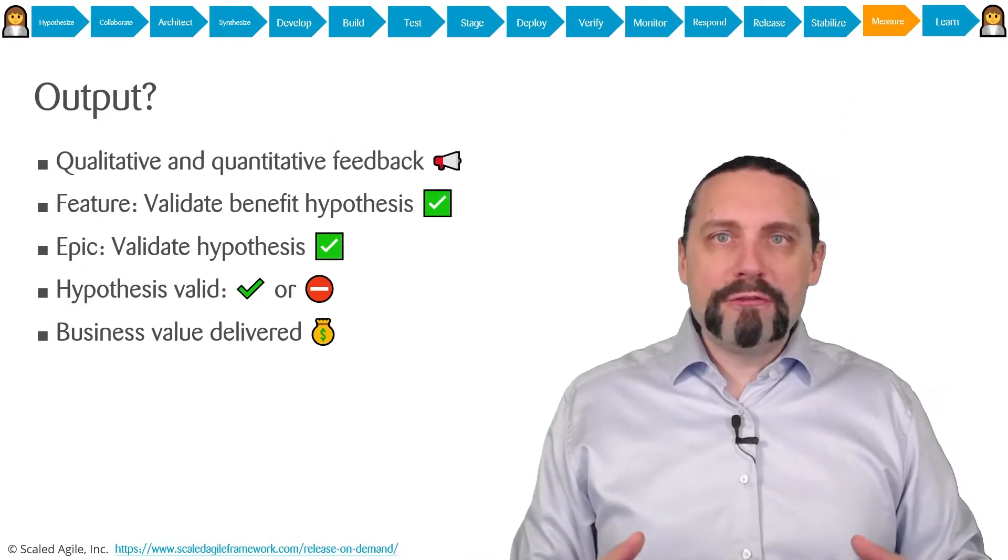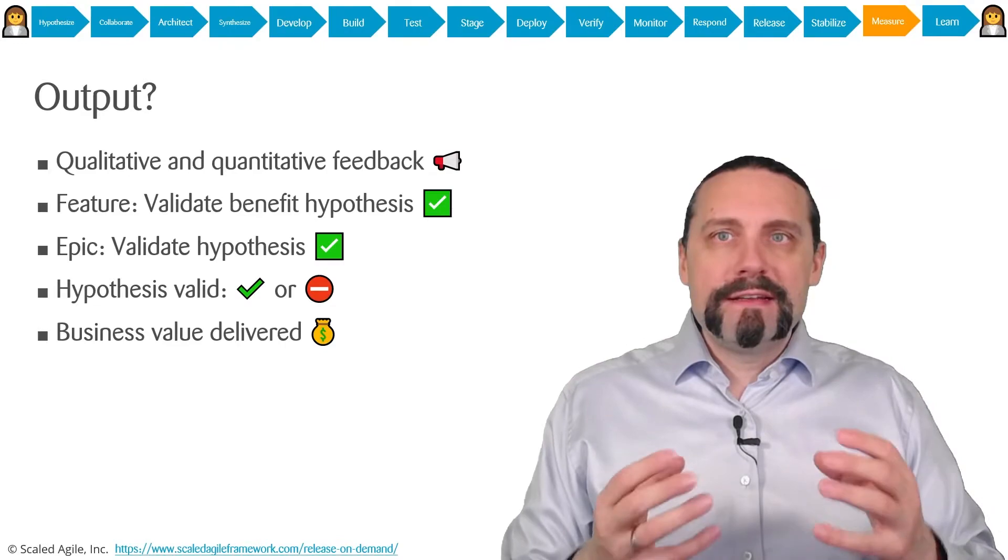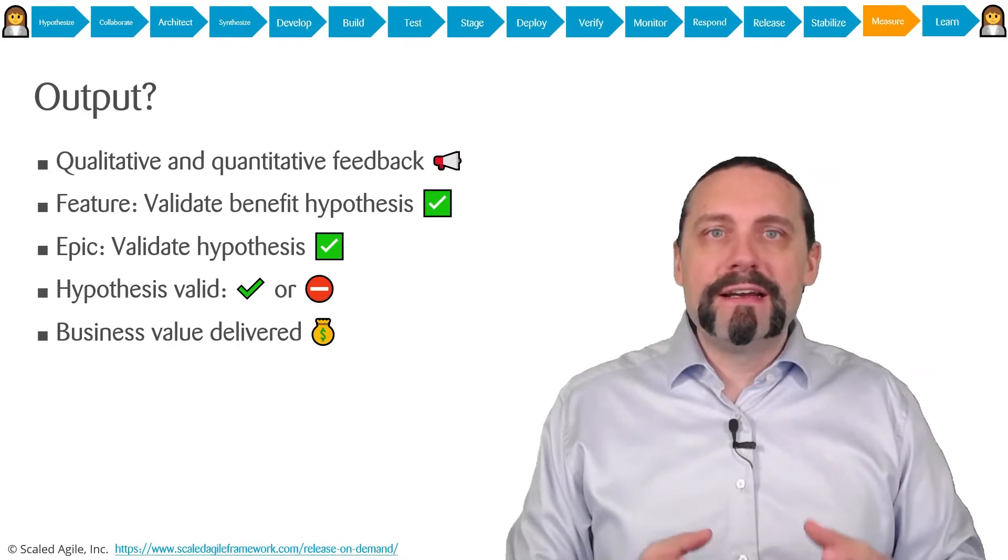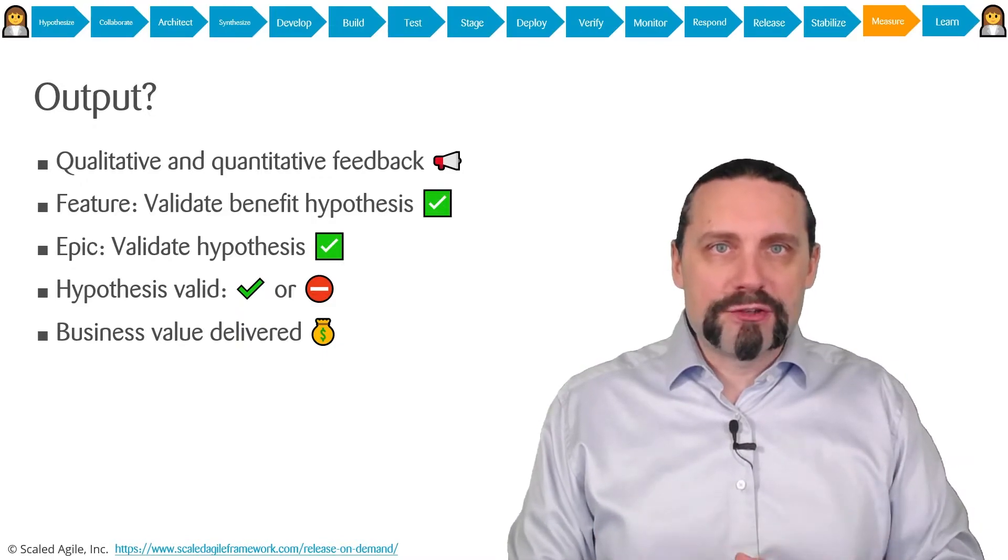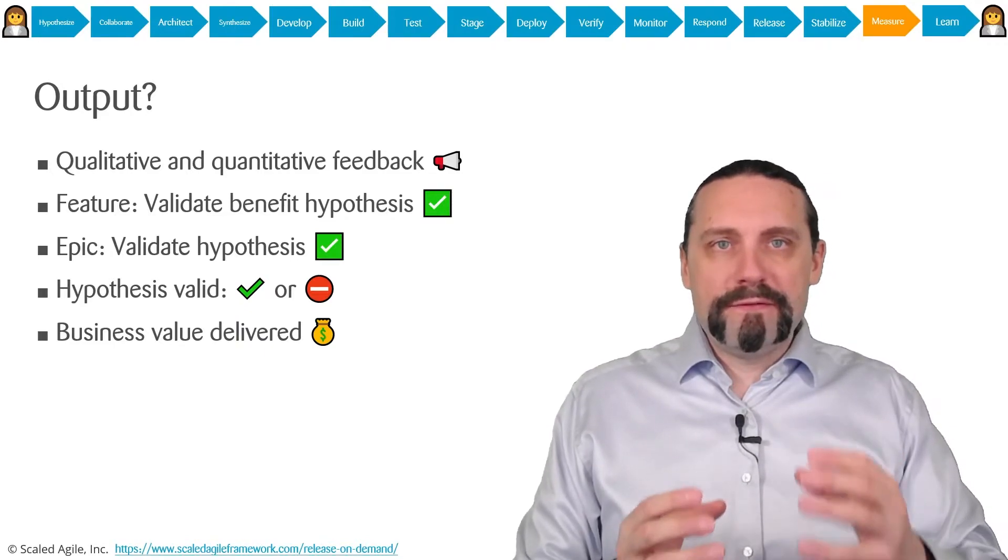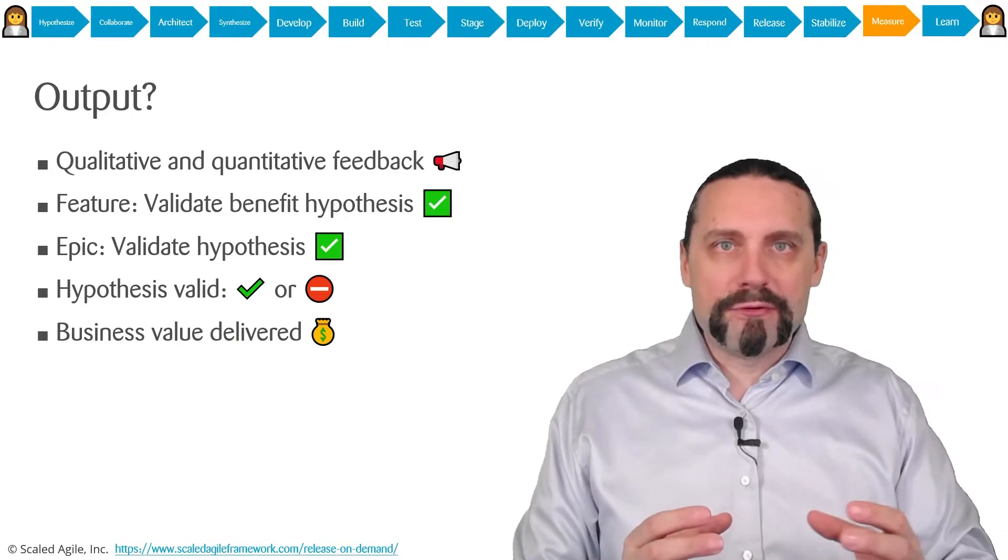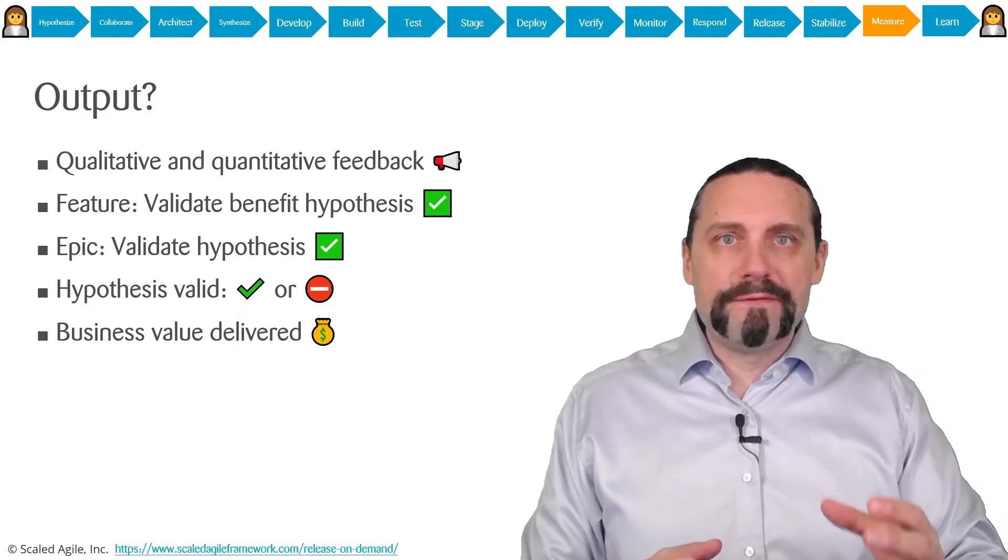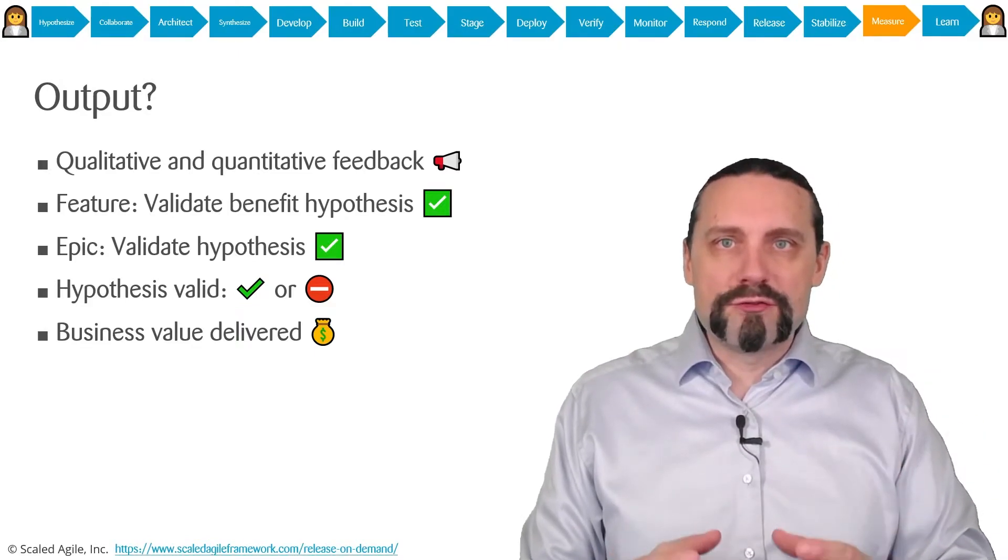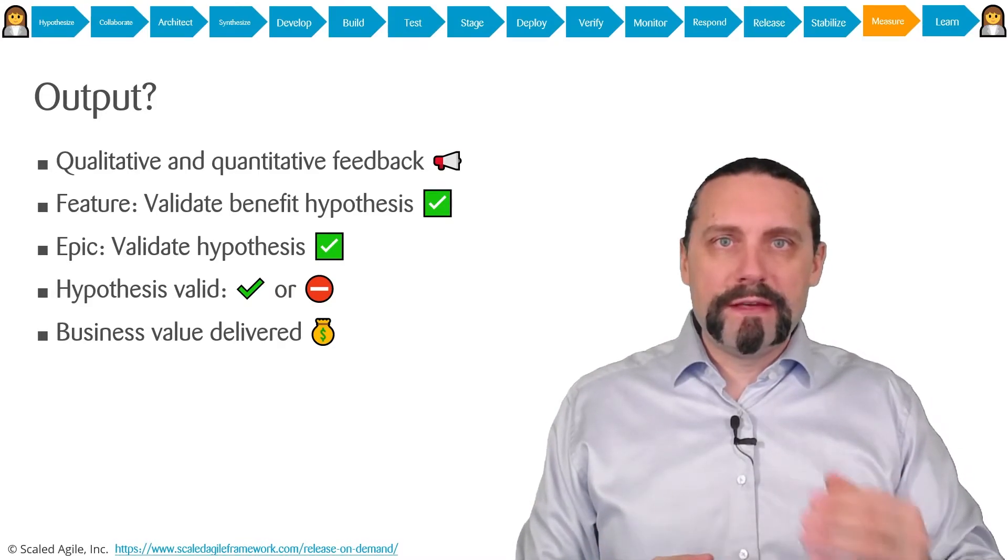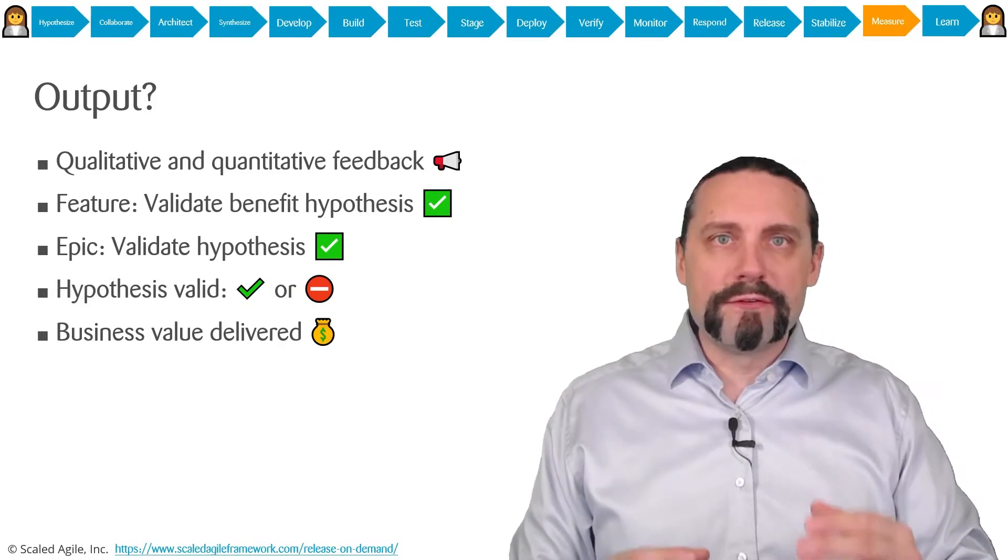So the output of the measure step is that we have qualitative and quantitative feedback about our epics and features. For features we want to identify if they fulfill the benefit hypothesis stated in the feature. For an epic we want to validate if the hypothesis is true or false. And of course we want to identify if we're able to deliver the business value.